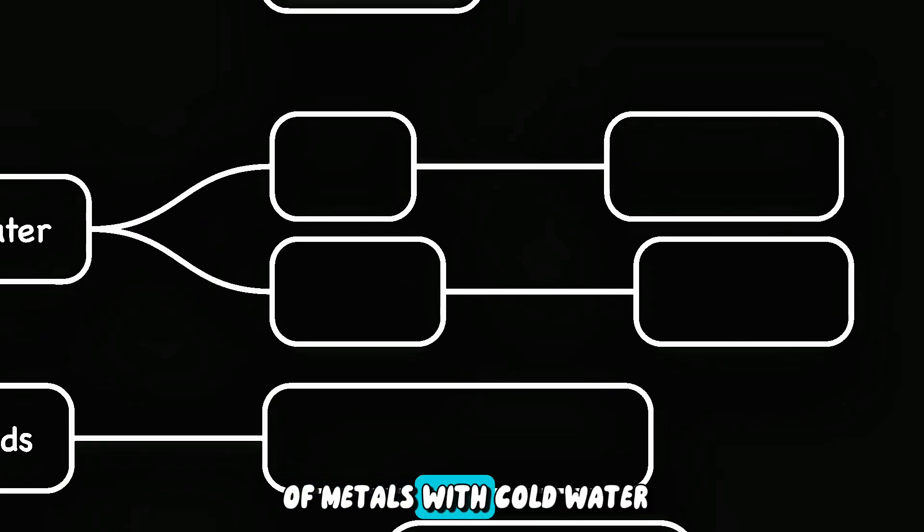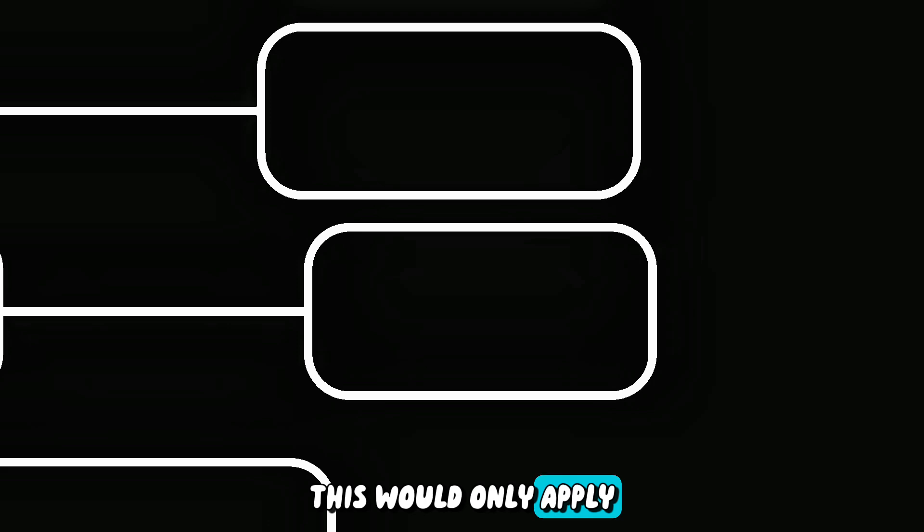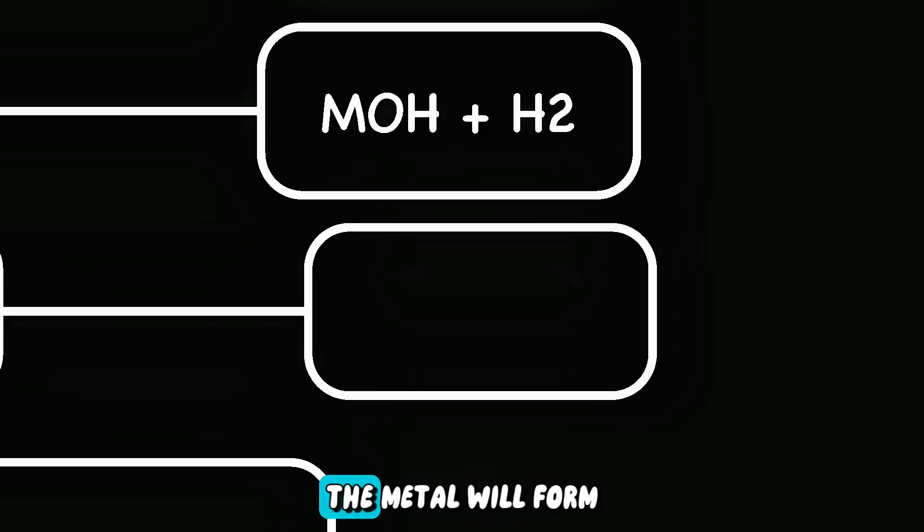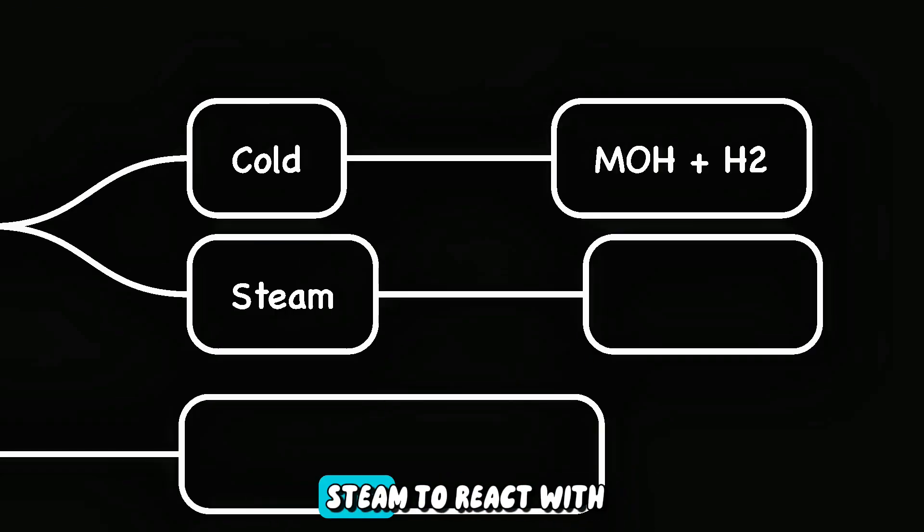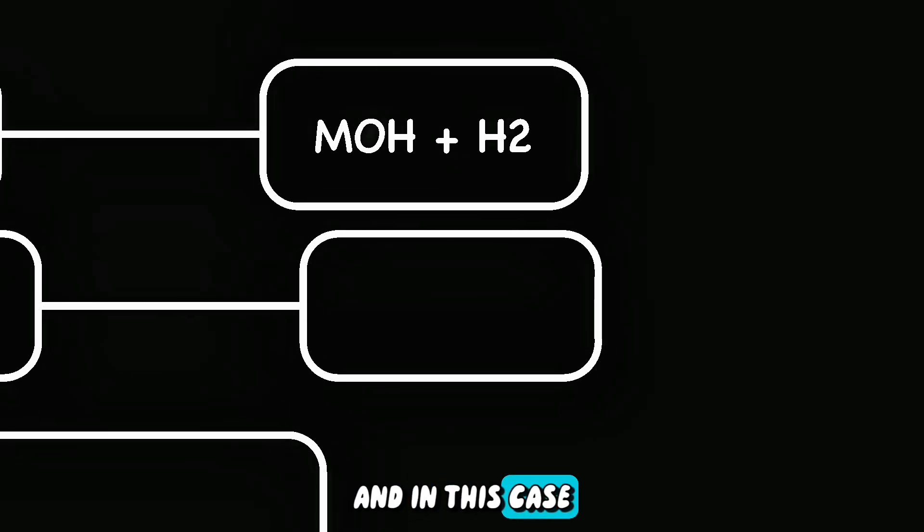First is reaction of metals with cold water. This would only apply for highly reactive metals, such as metals of group 1. In this case, the metal will form metal hydroxide and hydrogen. Less reactive metals require steam to react with. And in this case, they're not going to form metal hydroxide. Instead, they'll form metal oxide and hydrogen.